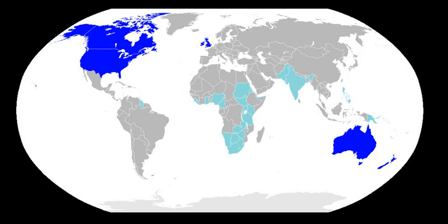Specialized subsets of English arise spontaneously in international communities, for example among international business people, as an auxiliary language. Globish uses a relatively small subset of English vocabulary — about 1,500 words with highest use in international business English — in combination with standard English grammar. The increased use of the English language globally has had an effect on other languages, leading to some English words being assimilated into the vocabularies of other languages. This has led to concerns about language death and claims of linguistic imperialism. However, the number of speakers continues to increase because many people around the world think that English provides them with opportunities for better employment and improved lives.